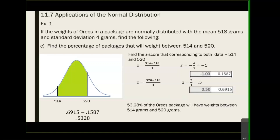We don't know exactly how much each one weighs — some might weigh 515, some might weigh 519 — but the green shaded area represents 53.28% of your data.